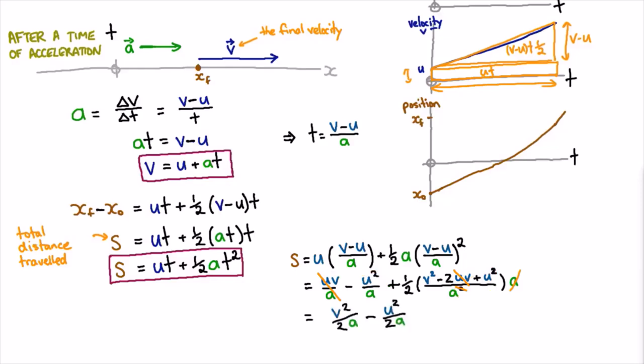If we multiply both sides by 2a, that's our final equation relating the initial and final velocities and how far you travel for a constant acceleration.